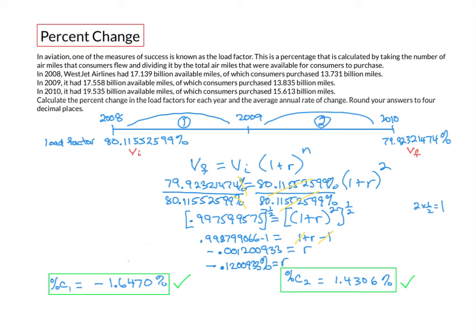Rounding to four decimal places, the fourth digit is 0 and the digit to the right is 9, which is bigger than 5, so we bump it up. Our final answer is r equals negative 0.1201%. The annual rate of change is negative because from 2008 to 2010, the load factor went down overall. So to summarize: the percent change from 2008 to 2009 is negative 1.6470%, from 2009 to 2010 is 1.4306%, and the average annual rate of change is negative 0.1201%.